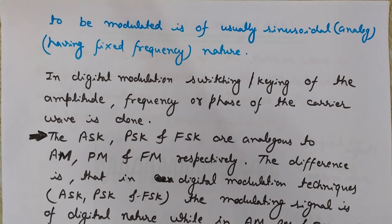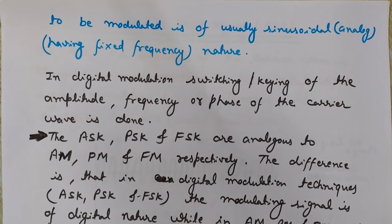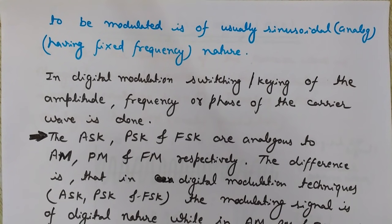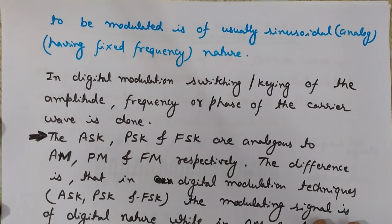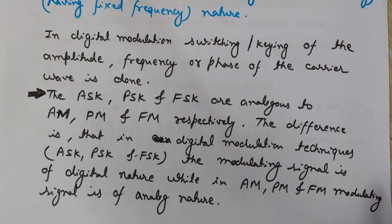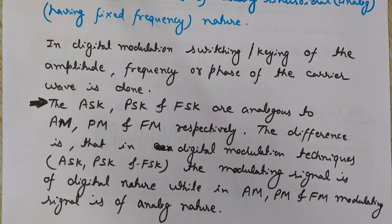The carrier wave used in digital modulation techniques is analog and generally sinusoidal. In ASK, PSK, and FSK, this is known as switching or keying of the amplitude, frequency, or phase of the carrier wave as per the message signal. ASK, PSK, and FSK are analogous to AM, PM, and FM respectively — the difference is that in digital modulation the modulating signal is digital, while in analog modulation it is analog.